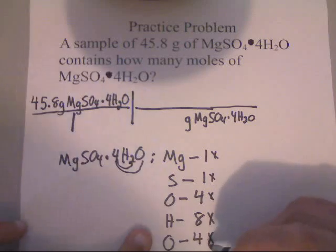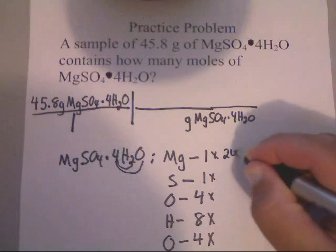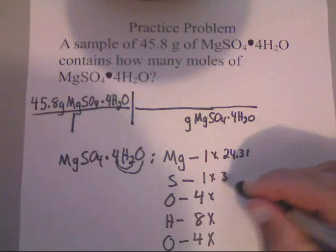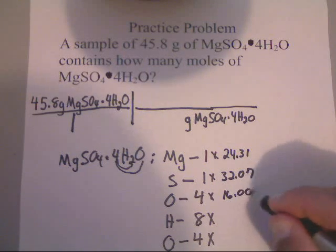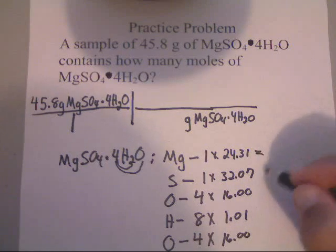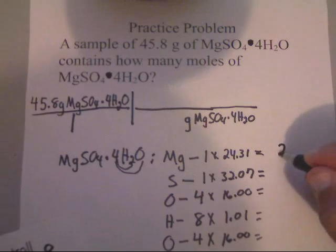Alright, now, let's look these up in the periodic table. The one that we use in class, Mg is 24.31. So, that's 24.31. Sulfur is 32.07. Oxygen is 16.00. Hydrogen, 1.01. Oxygen, again, 16.00.